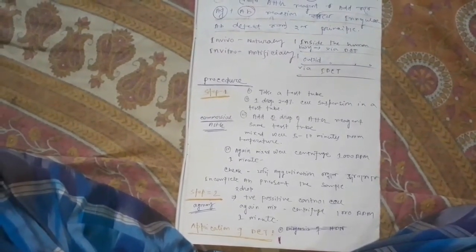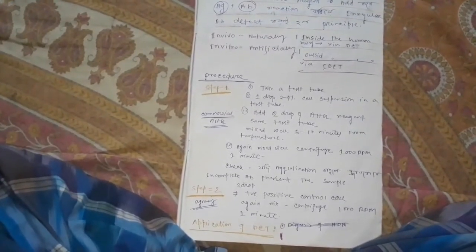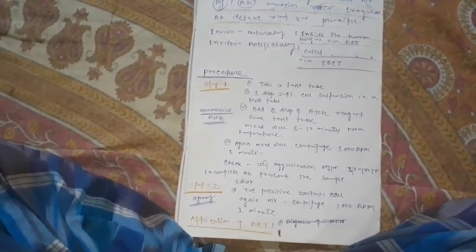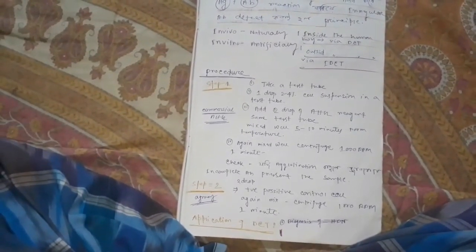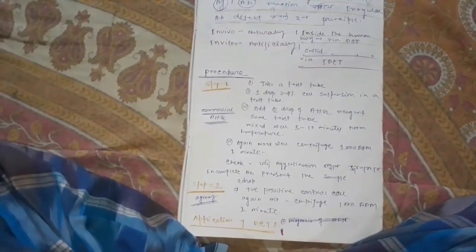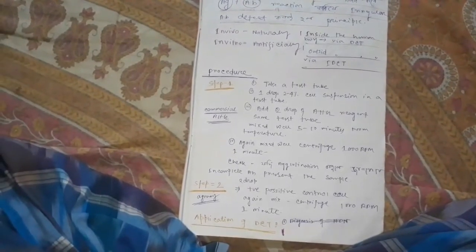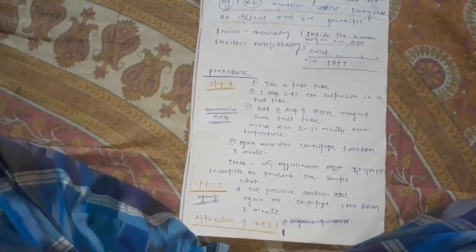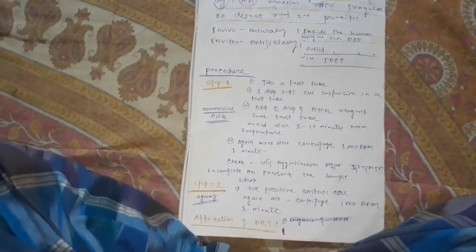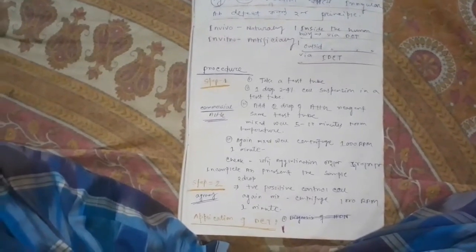To the cell suspension, add 2 drops of anti-human globulin reagent. Add this and wait for 5 to 10 minutes at room temperature. Then add and centrifuge for 1 minute.